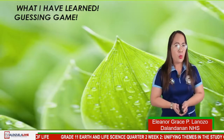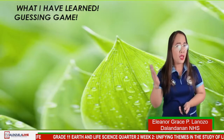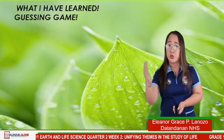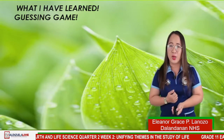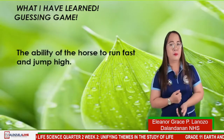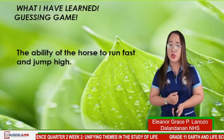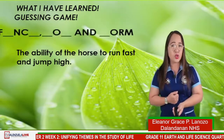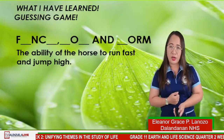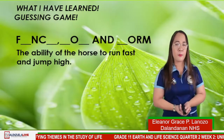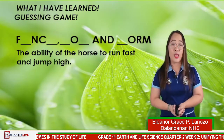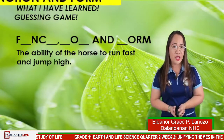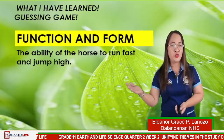Now, what have you learned at this moment? I want you to answer this guessing game. For number 1: the ability of the horse to run fast and jump high — comment down your answer. The answer is form and function.